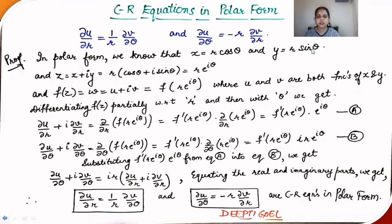Welcome to this new session on complex variables. In this session we shall be discussing how to write the CR equations in polar form and what will be the derivative of a function in polar form. The CR equations in polar form are: ∂u/∂r = (1/r)∂v/∂θ and ∂u/∂θ = -r ∂v/∂r.